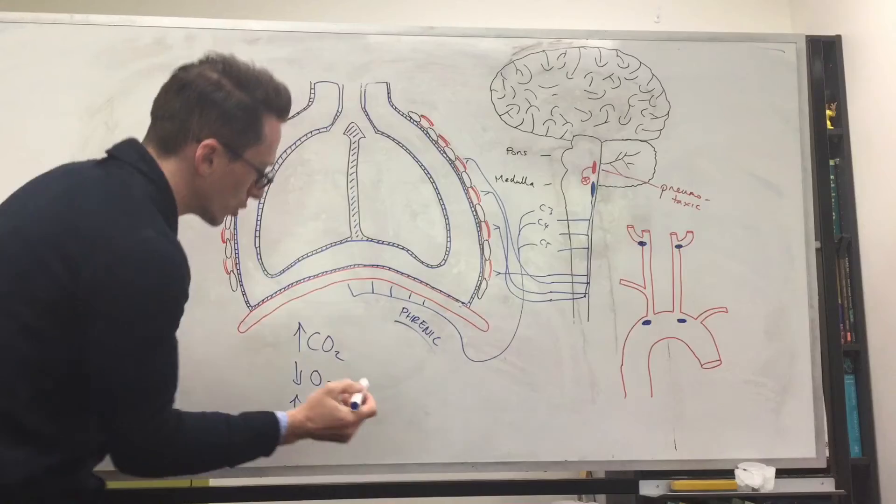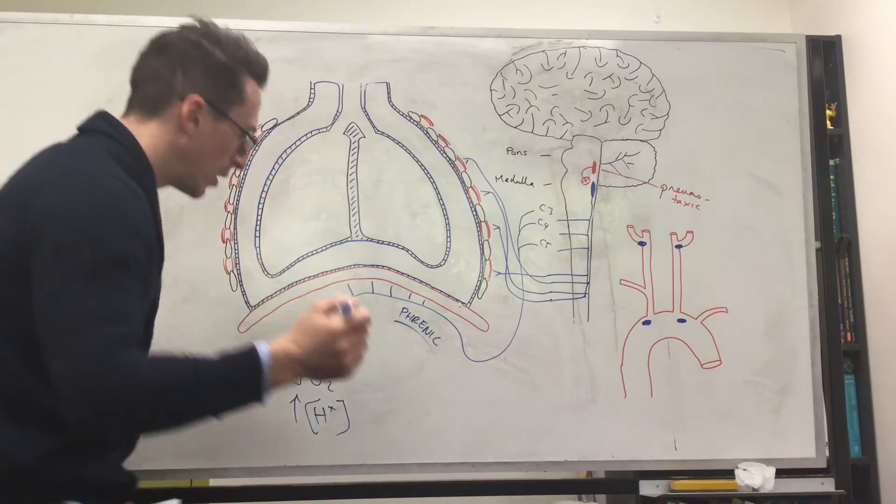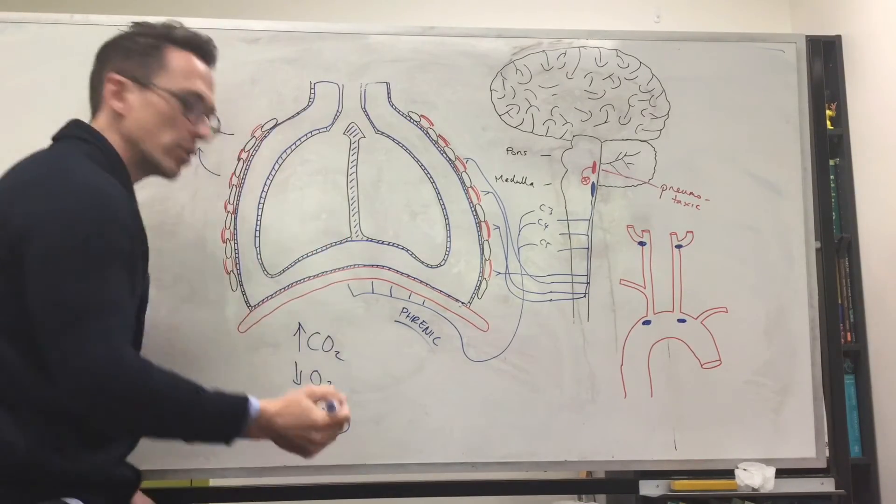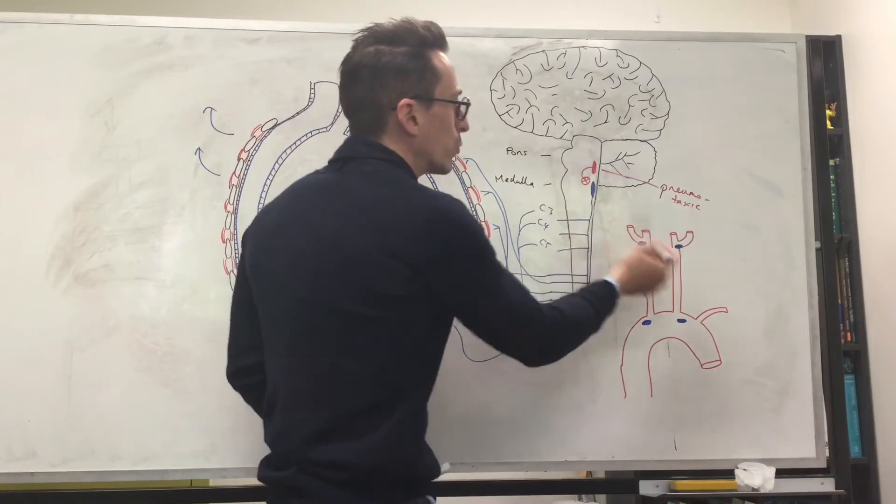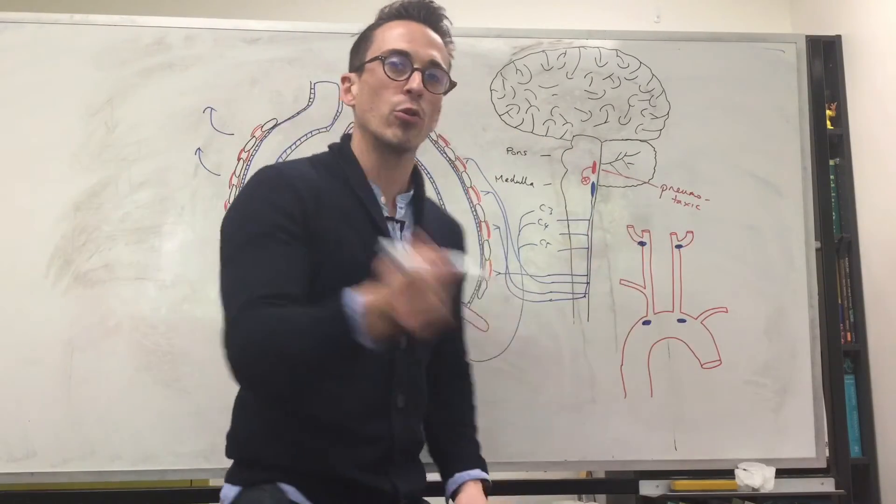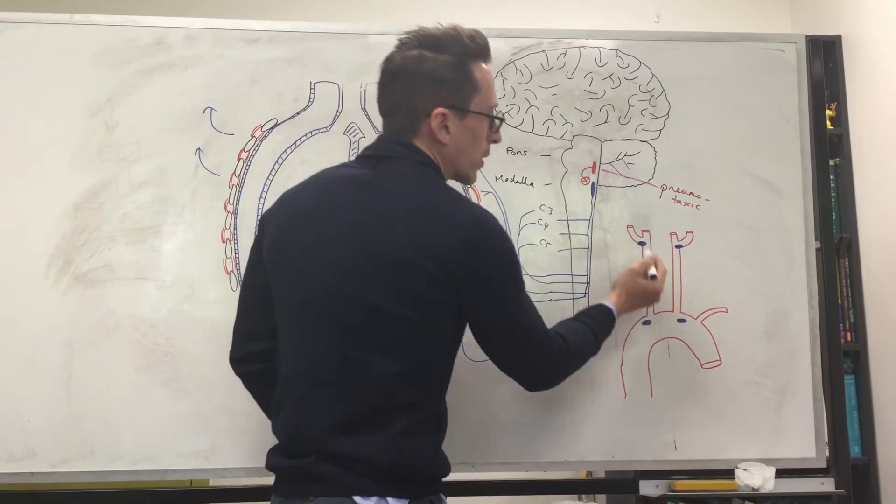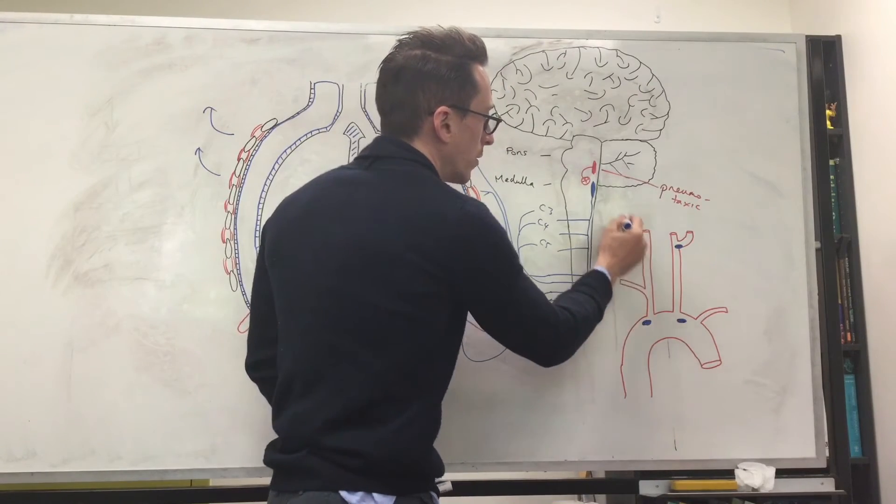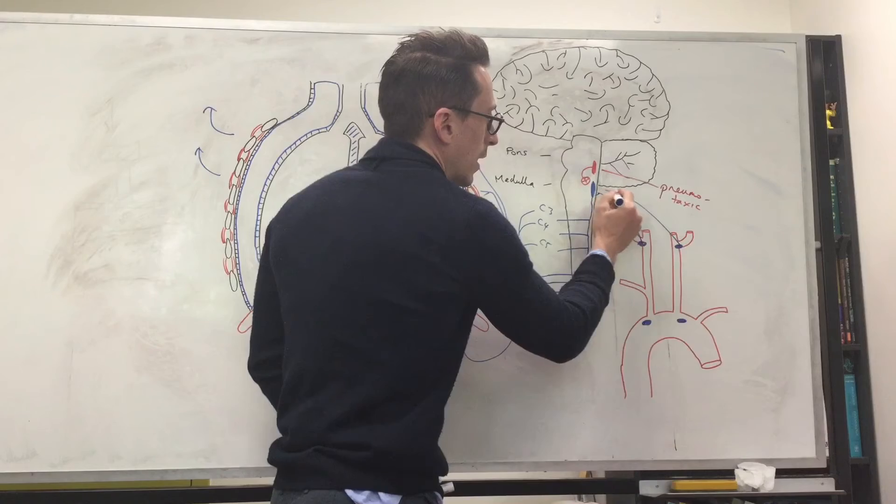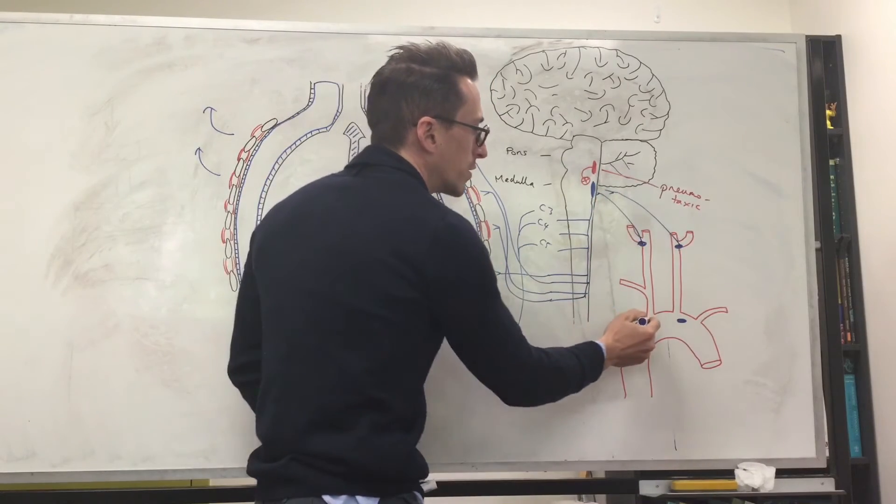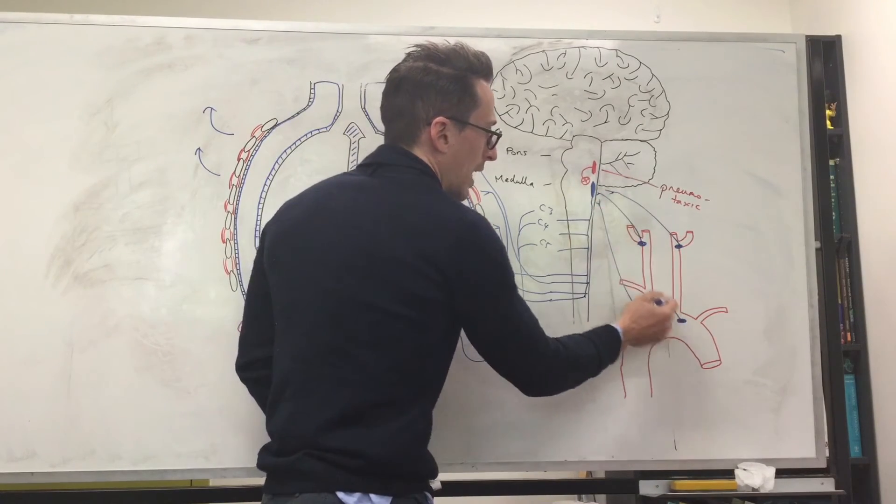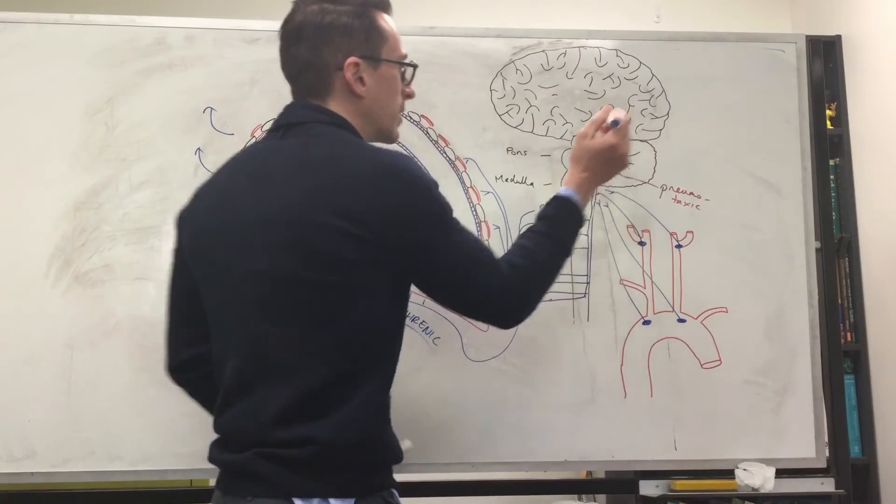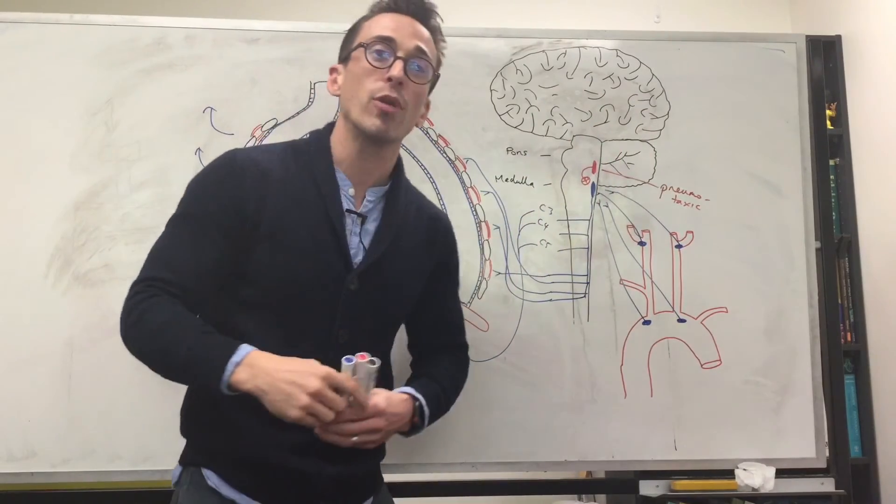And they will pick up concentrations of increased carbon dioxide, decreased oxygen, and increased hydrogen ion concentration. And they will send signals to this inspiratory center. Now, if they're doing it via the carotid, it's going to be through the glossopharyngeal nerve. And if it sends it via the aortic arch, it's via the vagus nerve. And like I said, it stimulates these neurons and tells you, let's breathe a little bit more.